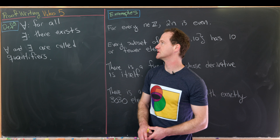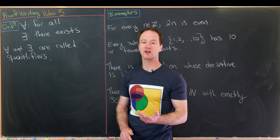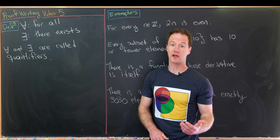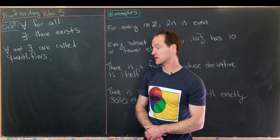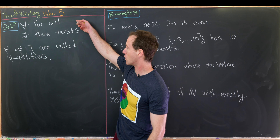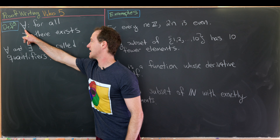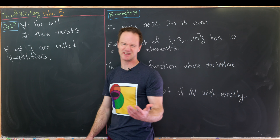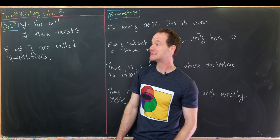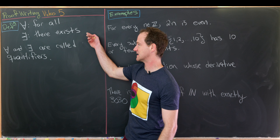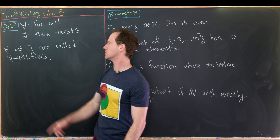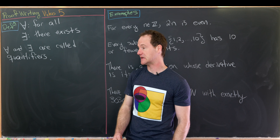This is the fifth video in a series devoted to introductory proof writing. Today we're going to look at quantifiers — both the universal quantifier 'for all,' which has the symbol of an upside-down A, and the existential quantifier 'there exists,' which has the symbol of a backwards E.